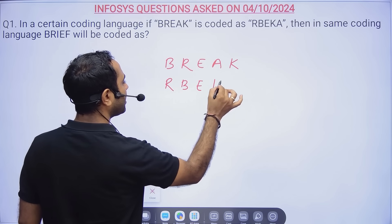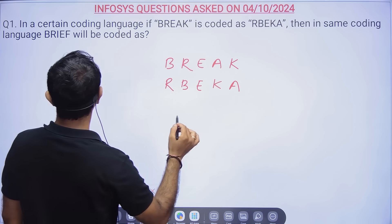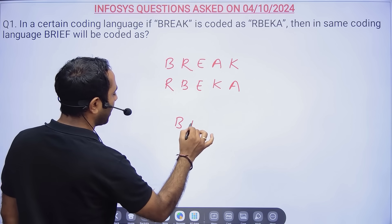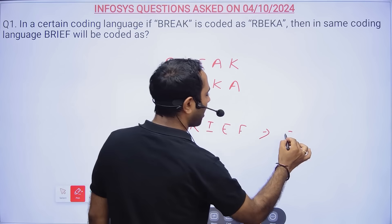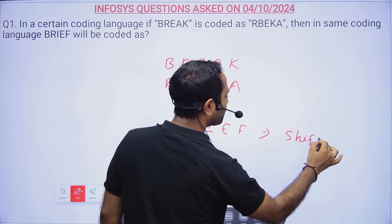In a certain coding language, if BREAK is coded as RBEKA, then in the same coding language BRIEF will be coded as? This was asked in shift one.